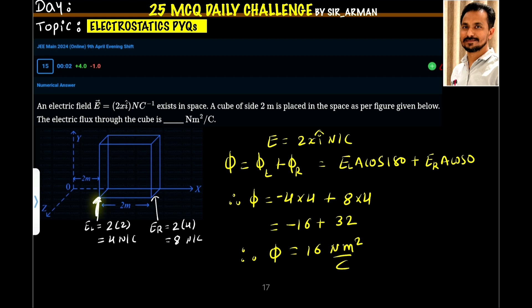At this point, the electric field E equals 2 times x. Now, what is this distance x? It is 2 meters, which is given. So it is 2 times 2, which equals 4 Newtons per Coulomb.